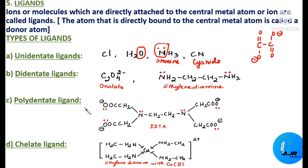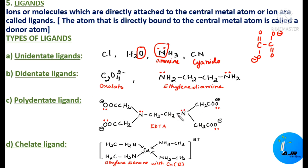Polydentate ligands are bound to the central metal ion through several donor atoms. For example, EDTA-type ligands have multiple donor atoms — oxygens and nitrogens — all forming coordinate bonds with the central metal atom. Since several donor atoms are present, it comes under polydentate ligand.